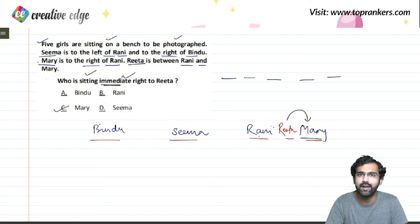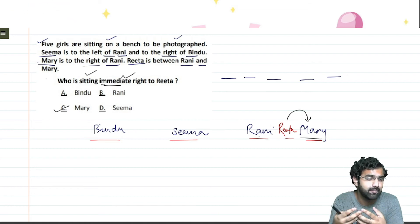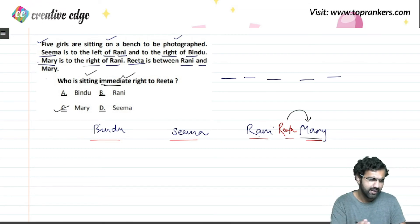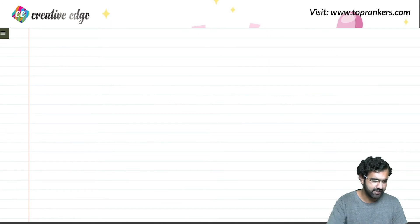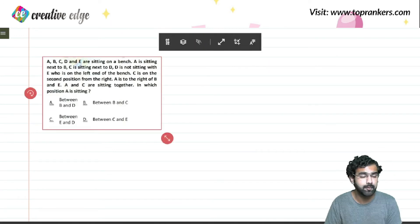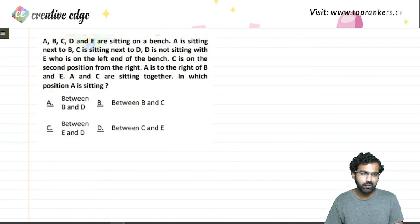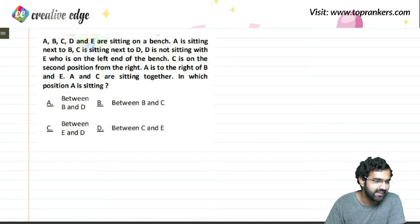I hope you are getting clarity on how to visualize and create these sequences. Let's understand one more example. This question is again based on linear arrangement — a row kind of arrangement. A, B, C, D, E are five people sitting on a bench.